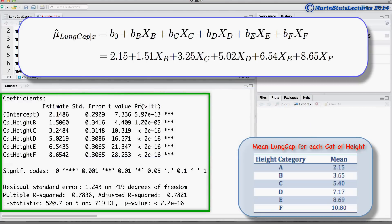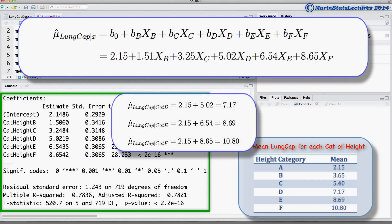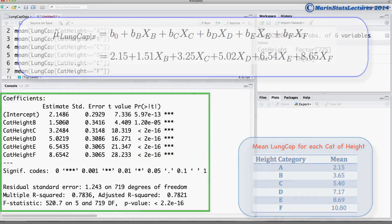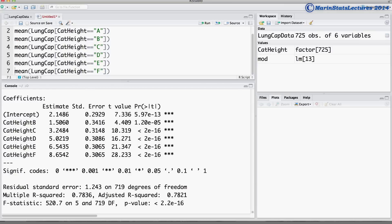You can repeat this process to calculate the mean lung capacity for all other height categories. And if you do this, you'll see the mean for category D is 7.17, the mean for category E is 8.69, and the mean for category F is 10.8. Using dummy or indicator variables is how we can include categorical or qualitative variables into a regression model.